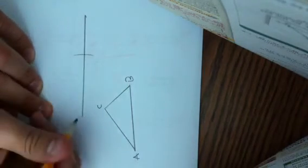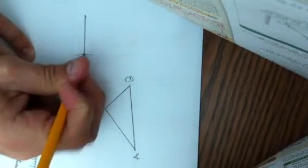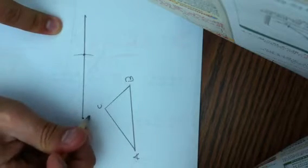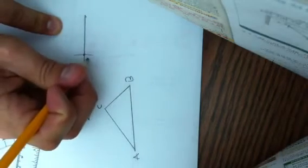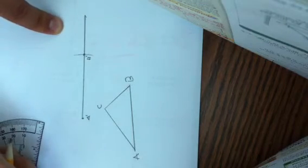From this point right here that I started to this point on the line is exactly the same distance as AB. So I'm going to make this A with an apostrophe, B with an apostrophe. Those are my new sides.